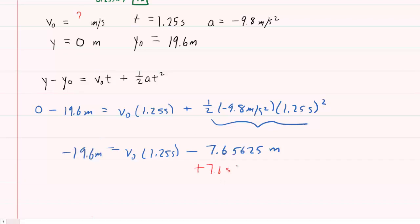We'll add this 7.65625 meters to both sides. We'll cancel out on the right-hand side. You'll end up with about negative 11.9 meters here.